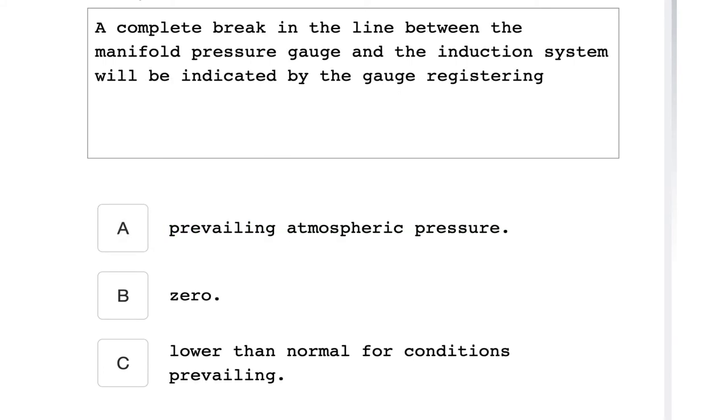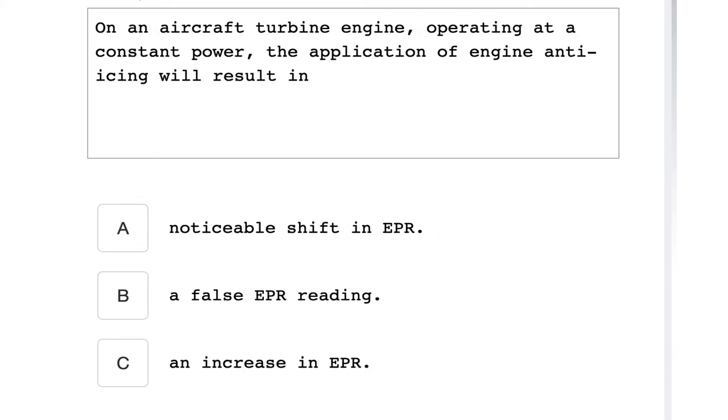A complete break in the line between the manifold pressure gauge and the induction system will be indicated by the gauge registering prevailing atmospheric pressure. On an aircraft turbine engine operating at constant power, the application of engine anti-icing will result in a noticeable shift in EPR.